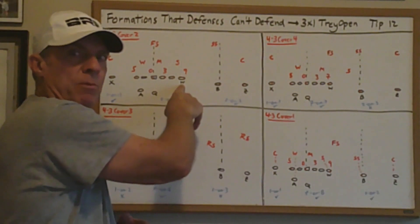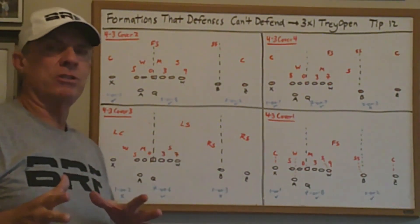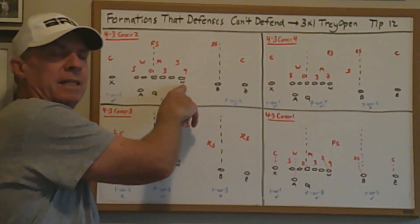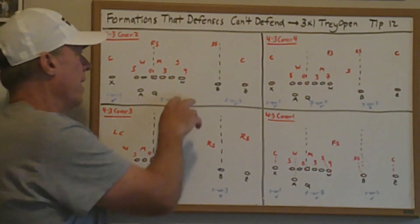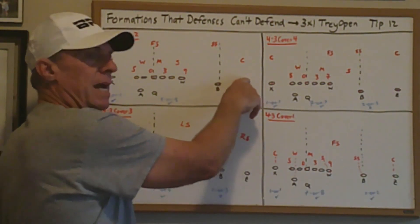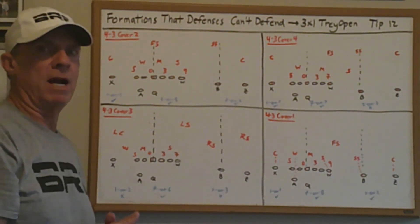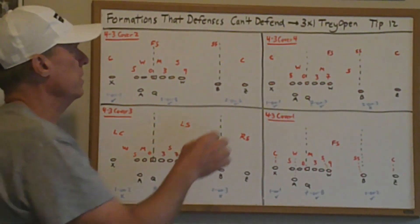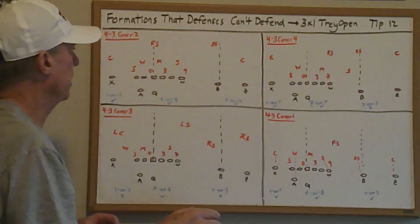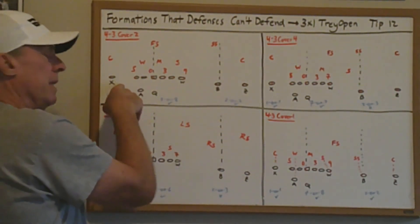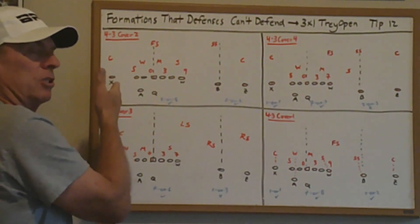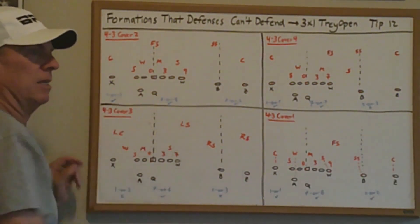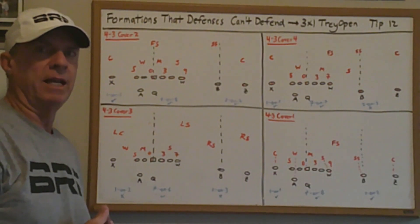Even though the tight end is labeled as a W on the board, anytime a tight end is used, he runs the W routes. In a three by one spread, the W would be a receiver outside running W routes. The only reason the tight end is labeled W is that. The formation is called Trey Open because the three receivers include the tight end, and Open means the X is split out as a split end receiver. If there was a tight end on the backside, it would be called Trey Tight.